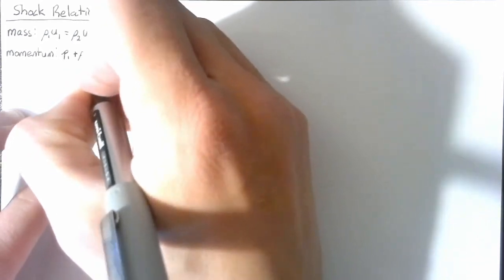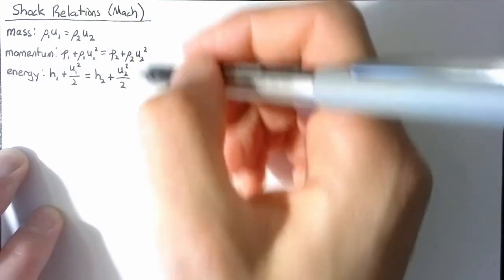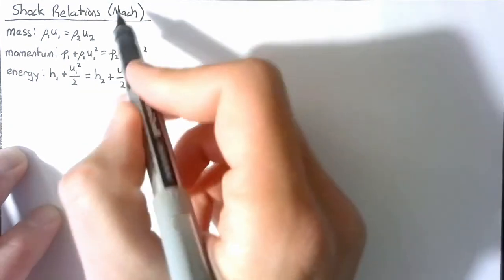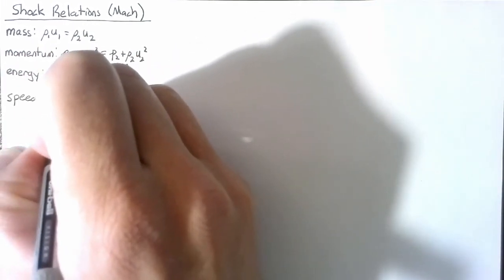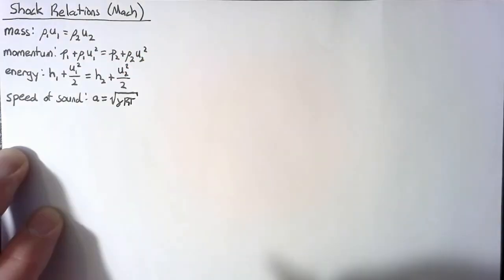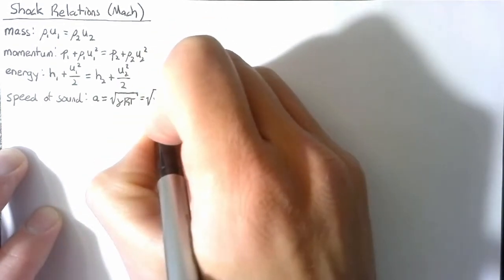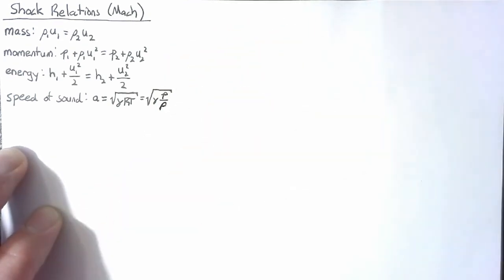This is actually quite a complex process. One of the key tools that we're going to be using is the definition of the speed of sound. That makes sense since we're trying to get to the Mach number, which is just velocity divided by the speed of sound. The speed of sound is equal to the square root of gamma times R times T, which is also equal to gamma times P divided by rho, and this holds true for any ideal gas.